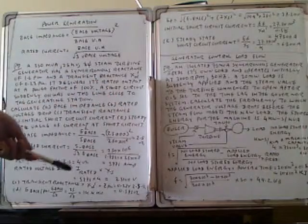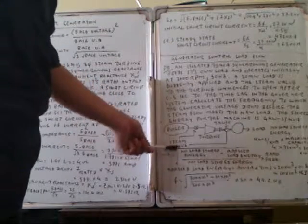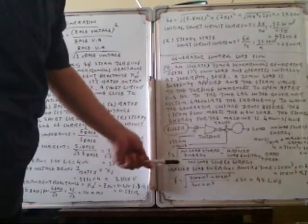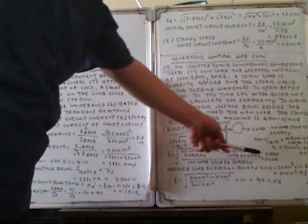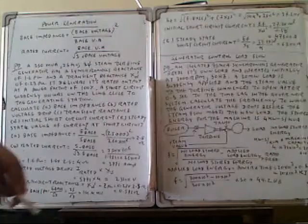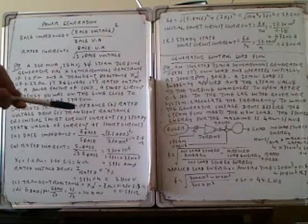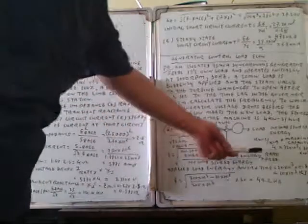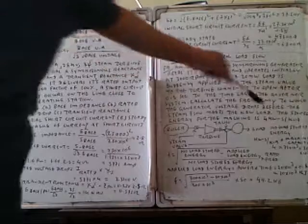To solve this, the frequency equation is: frequency equals the square root of (normal stored energy minus applied energy) divided by normal stored energy, multiplied by rated frequency. The rated frequency is 50 Hz.